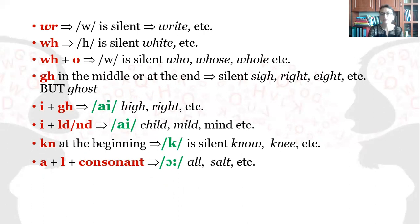KN at the beginning is silent, know, knee. A plus L plus consonant, so the letter A is going to be pronounced as all, as in all, soul. A plus LK, the L is silent and the O is long, talk, chalk.